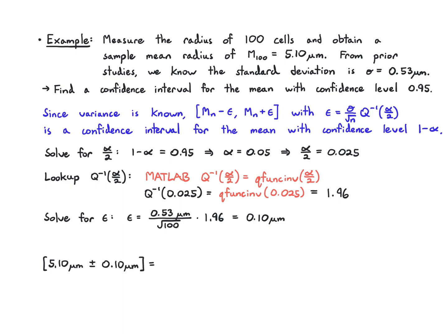So I just report that my confidence interval is 5.1 microns plus or minus 0.1 microns. Or I could equivalently write that as the interval from 5 microns to 5.2 microns. That's my confidence interval for the mean with confidence level 0.95. Either way of writing this is okay. You can either write it as the sample mean plus or minus the epsilon that you work out, or you can do the subtraction and addition and just report it as an interval.